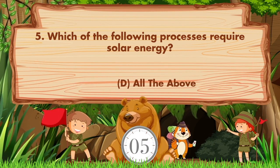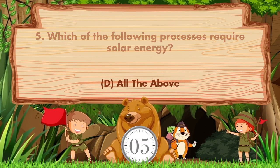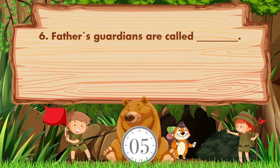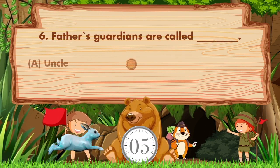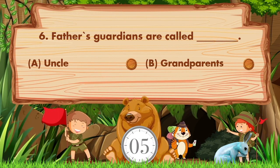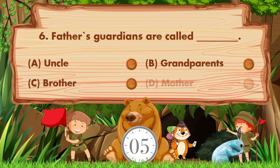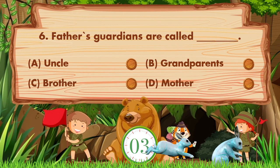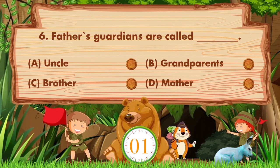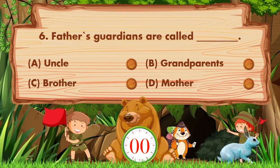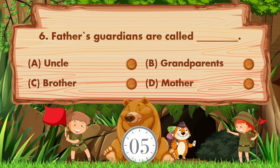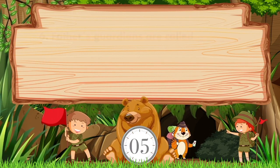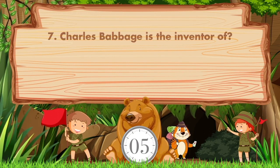Answer is option D, all of the above. Father's guardians are called blank. Option A: uncle, B: grandparents, C: brother, D: mother. Sorry, we don't know the answer — if you know the answer, then like the video.